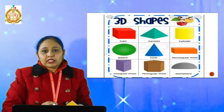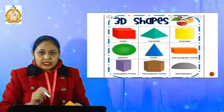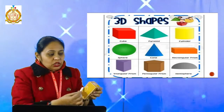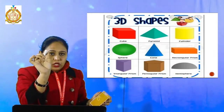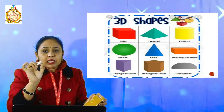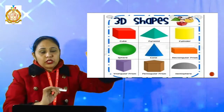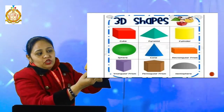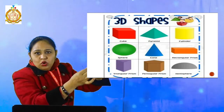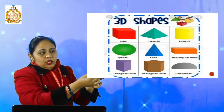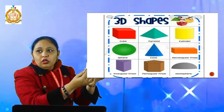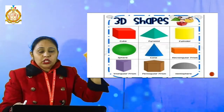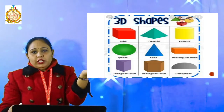Now we have to deal with the vertices. What is the meaning of vertices? That is the corner — where two edges or three edges meet, there is a corner. That is called a vertex. Now I count the vertices: one, two, three, four on this side, and one, two, three, four on the other side. Four plus four become eight. That means there are total eight vertices of this cuboid.